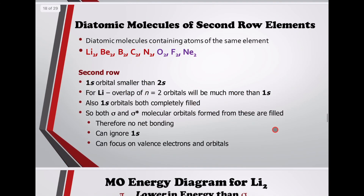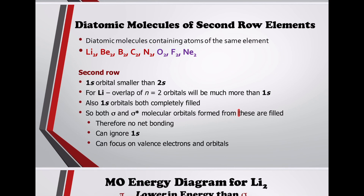Diatomic molecules of second-row elements contain atoms of the same element: Li₂, Be₂, B₂, C₂, N₂ use the 1, 2, 1, 2 ordering, while O₂, F₂, and Ne₂ use the 1, 2, 2, 1 ordering. For second-row elements, the 1s orbital is smaller than the 2s, so for lithium onward, overlap of n=2 orbitals is much greater than 1s. Since both bonding and anti-bonding sigma molecular orbitals from 1s are filled, there is no net bonding from 1s — we can ignore the 1s and focus on valence electrons and orbitals.